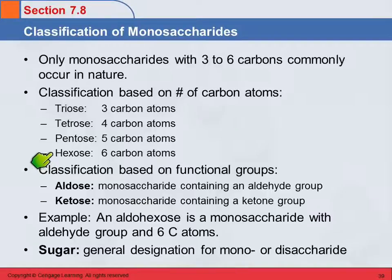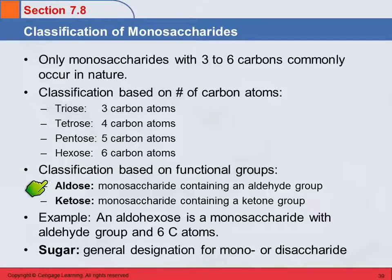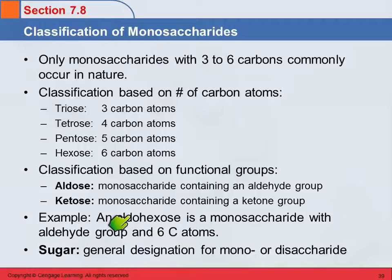We can also classify monosaccharides by their functional groups — whether it's an aldehyde or a ketone. An aldose is a monosaccharide that has an aldehyde group, and a ketose has a ketone group. Sometimes we'll combine those two classifications together. So if we're talking about an aldohexose, "aldo" means it's an aldehyde and "hexose" means it has six carbons — so it's a monosaccharide with an aldehyde group and six carbon atoms.